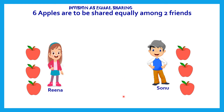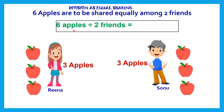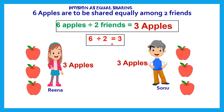Six apples, when shared equally, each person got three apples — equal sharing has taken place. When six apples are shared among two friends, using the division symbol, each friend got three apples. We write this using numbers and mathematical symbols as: six divided by two equals three. That is the division fact.